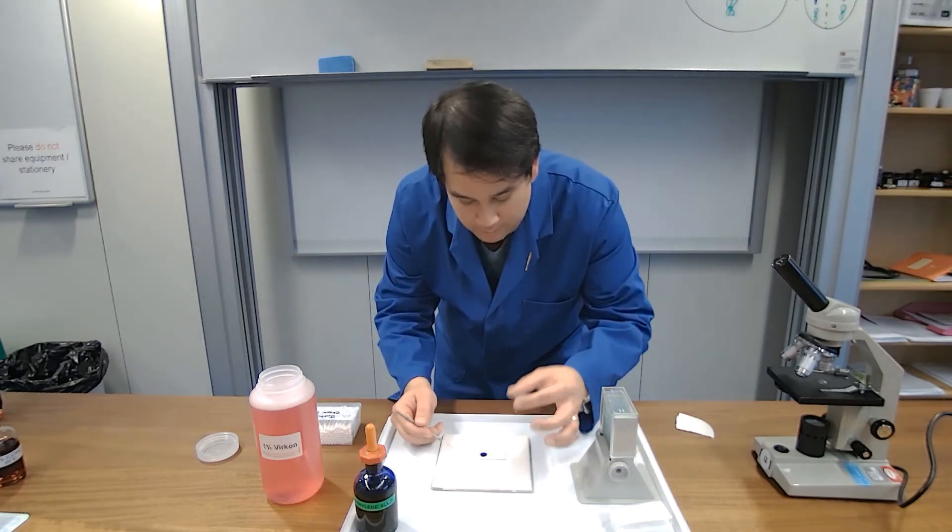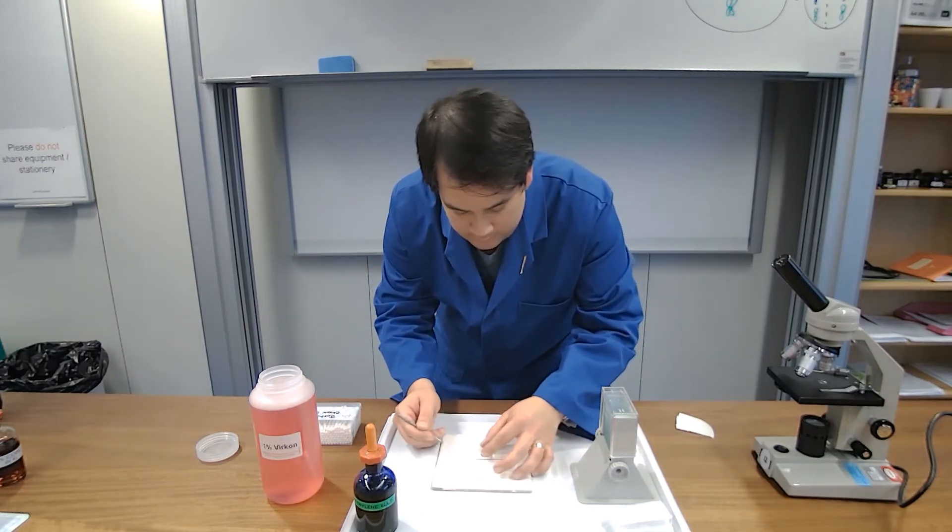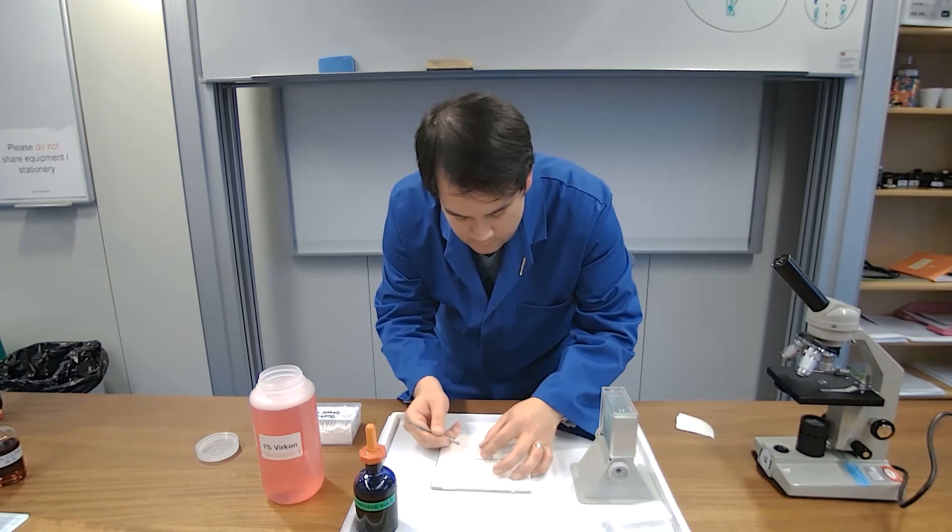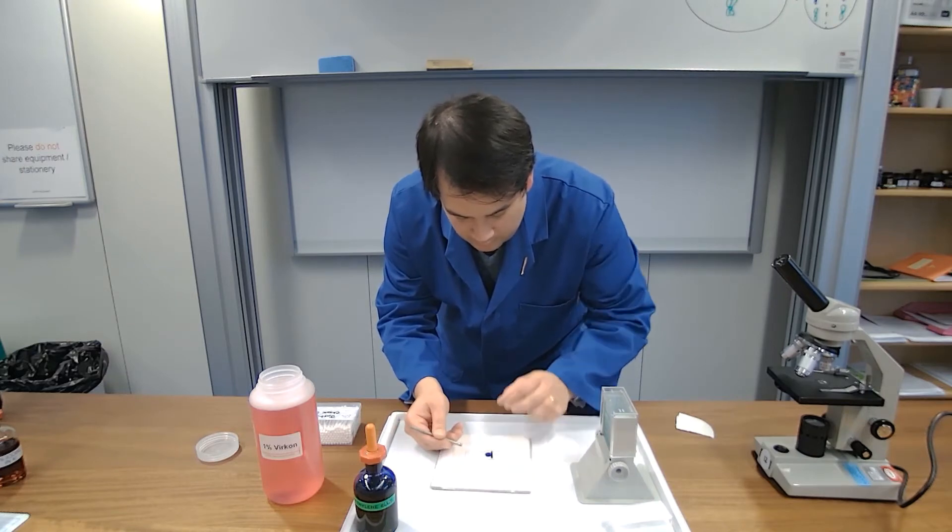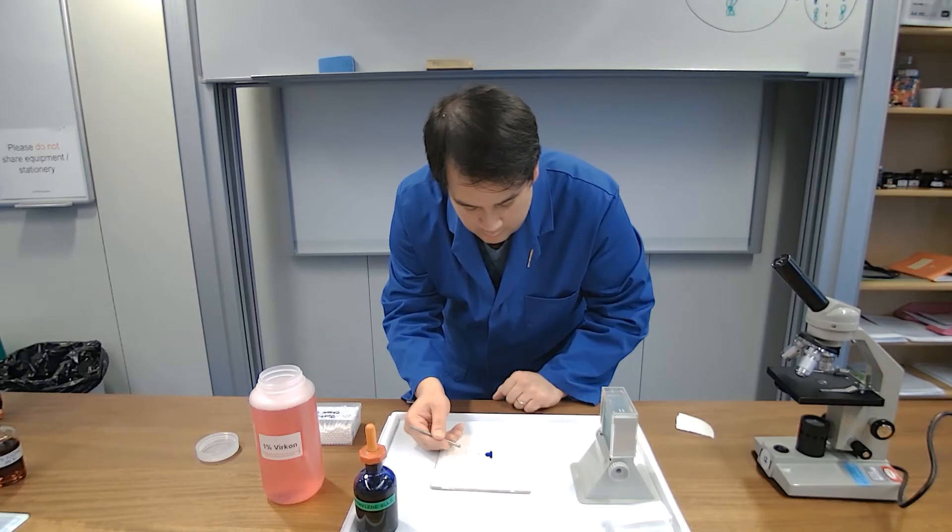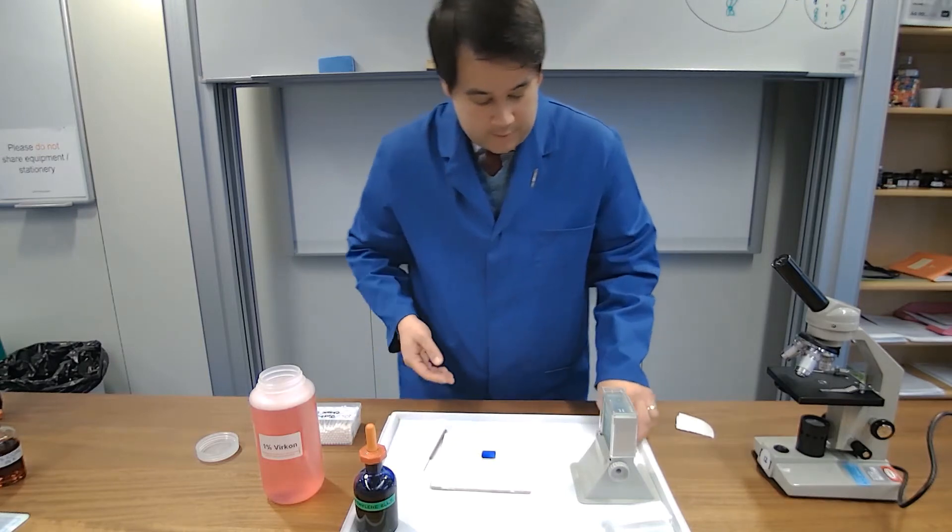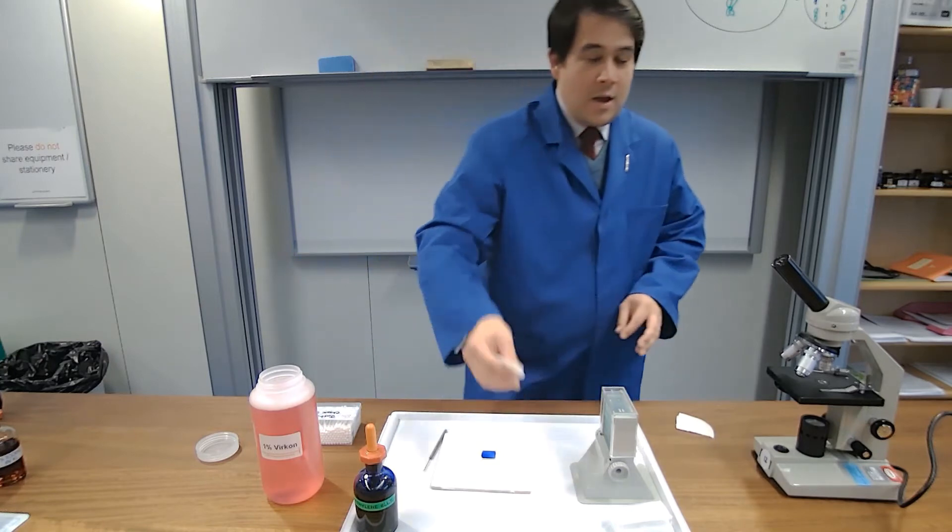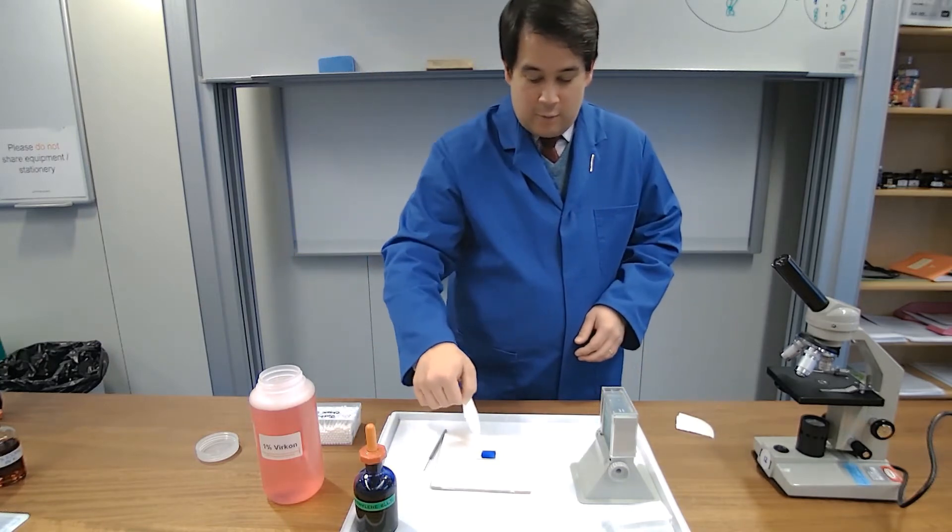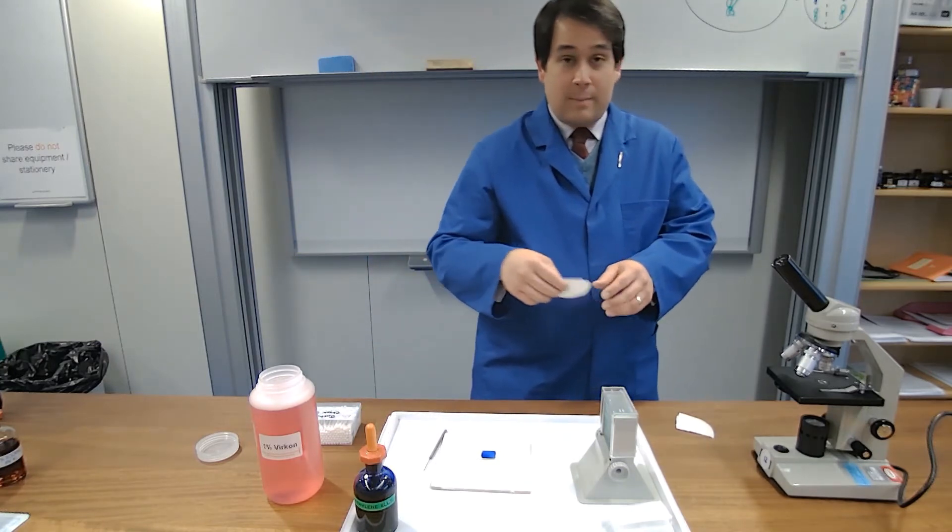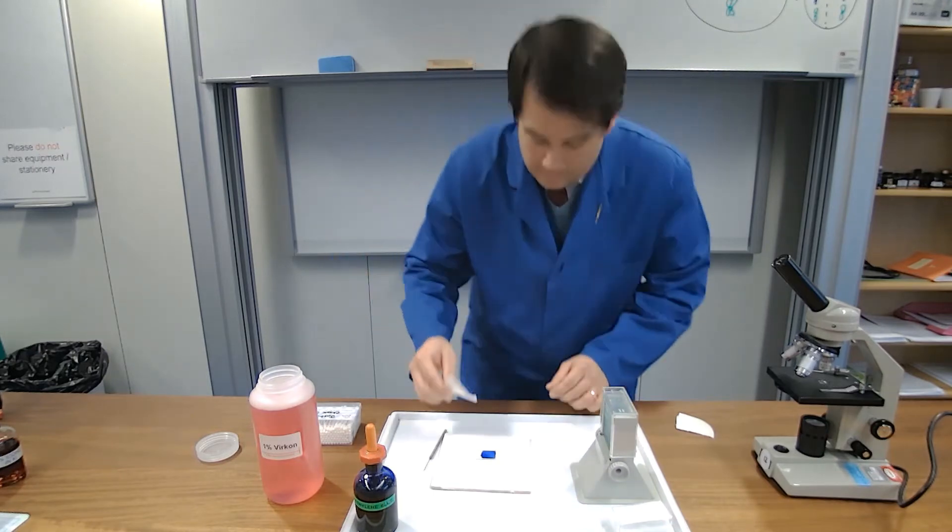So step one, we approach the liquid with the cover slip. Step two, we rest the cover slip on the mounted needle, and we slowly lower the mounted needle and then take it away, and then we have a perfectly made slide, if I just say so myself. Excess fluid, as you can see, gathering around the outside of the cover slip then can be taken away using some absorbent filter paper.